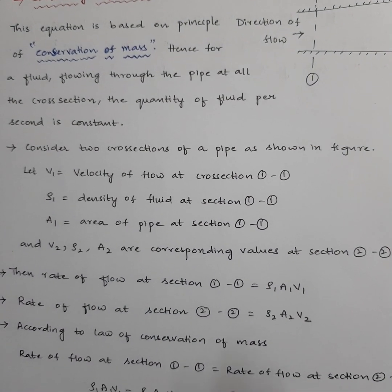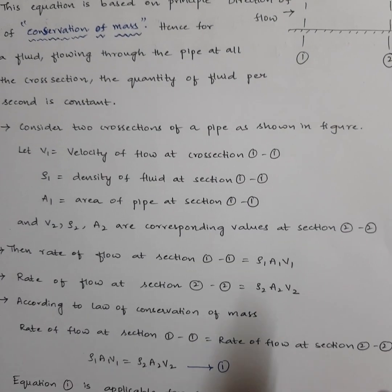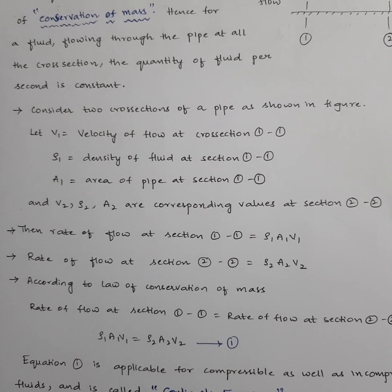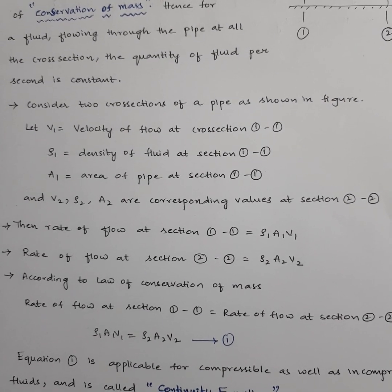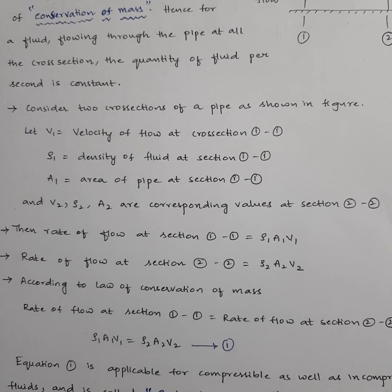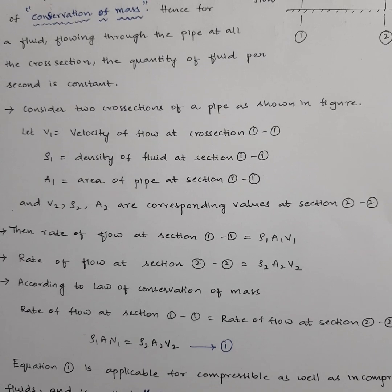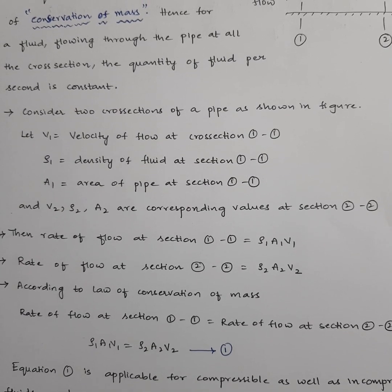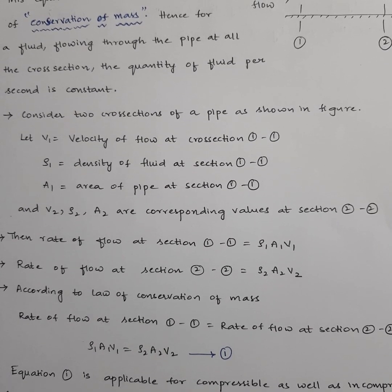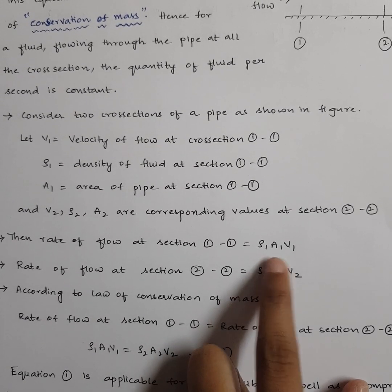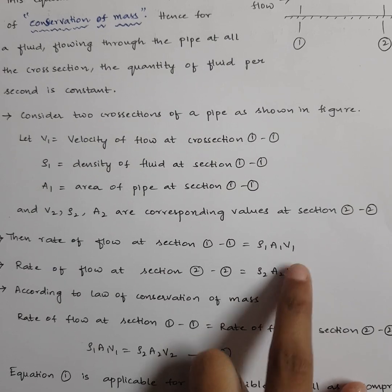Similarly, V2, rho 2, and A2 are the corresponding values at section 2. Therefore, the rate of flow, or the mass of fluid flowing per second through section 1, will be equal to rho 1 times A1 times V1.